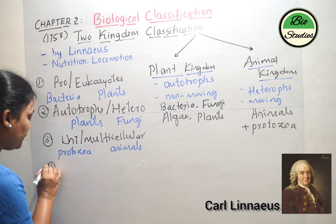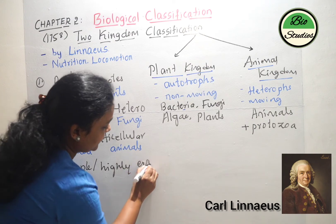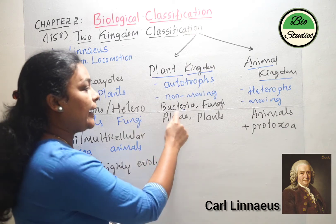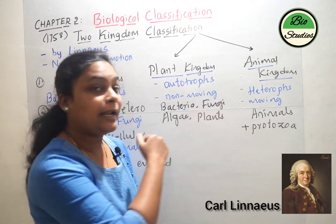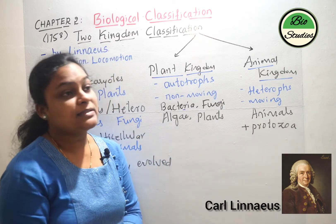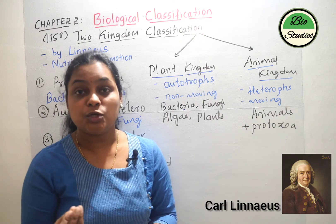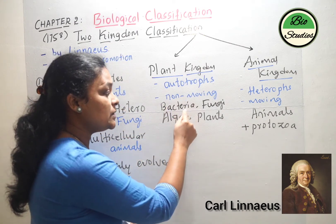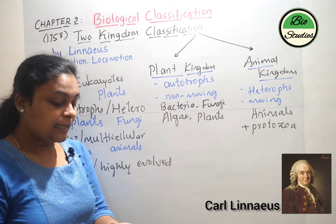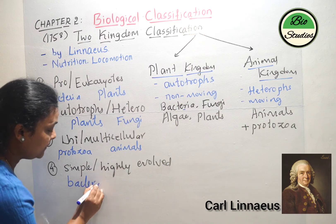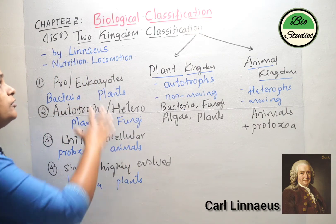The fourth limitation was that all simple organisms were placed with highly evolved organisms. Bacteria, since they have a primitive type of nucleus, were placed with highly evolved plants. In the next chapter we will study the different types of plants, and the most highly evolved plants are referred to as angiosperms. So these simple organisms were mixed with highly evolved angiosperm-type plants, and both were considered under one single kingdom. These are the few limitations of two kingdom classification.